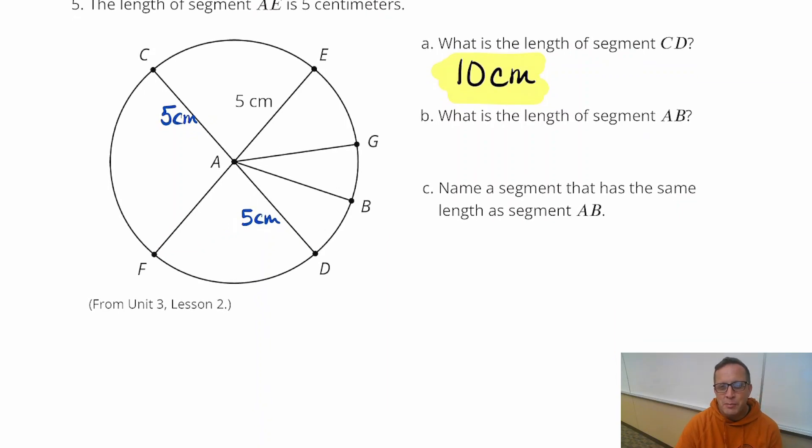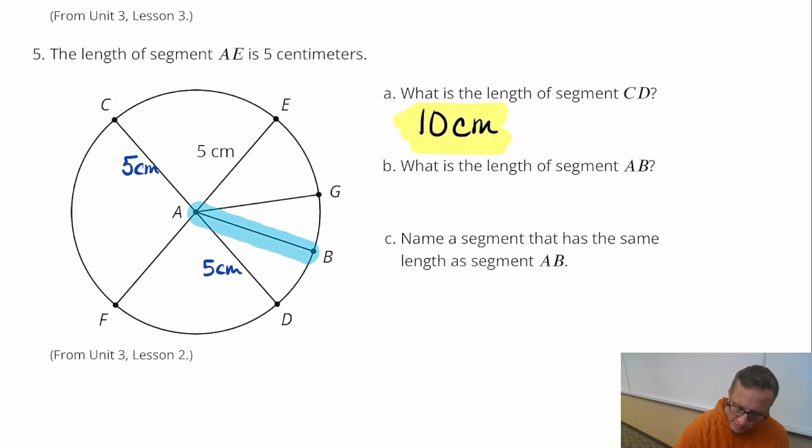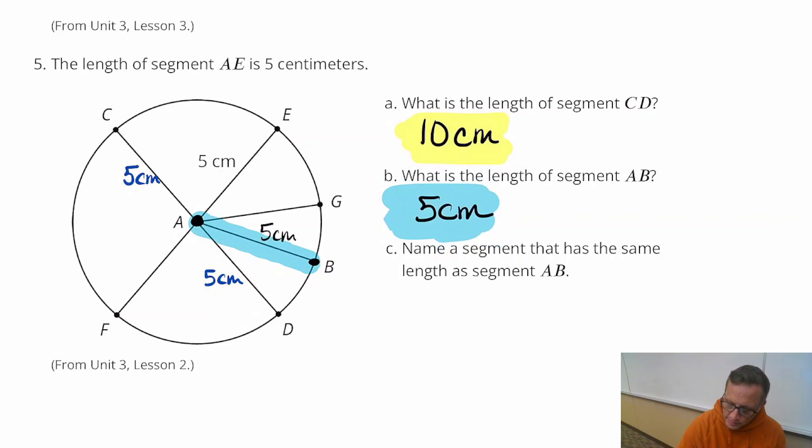What is the length of segment AB? AB is just right there, that's a radius. So that's 5. All the radii are the same. As long as it's coming from the center, and the endpoint's on the circle, it's a radius. No matter where it is, as long as you have one endpoint here and the other endpoint is on the circle itself, it's going to be 5 wherever you look. 5 centimeters.